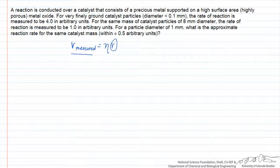For the finely ground catalyst, we observe an effectiveness factor of 1. For the 8 millimeter catalyst, the rate goes down by a factor of 4, so our effectiveness factor is 1/4.